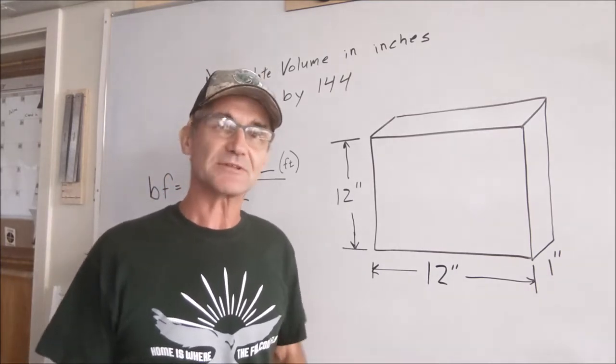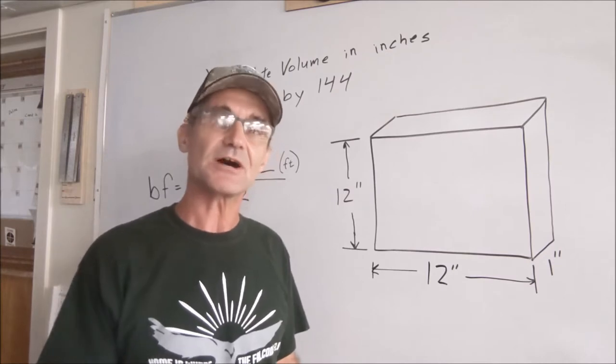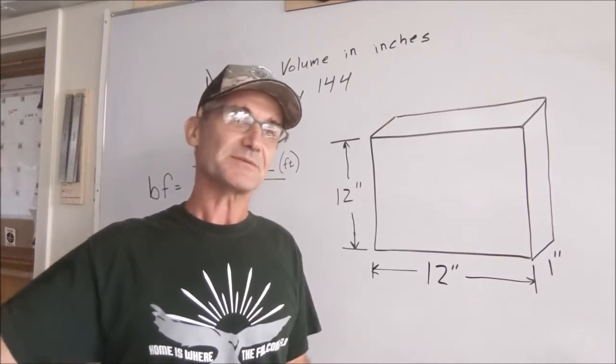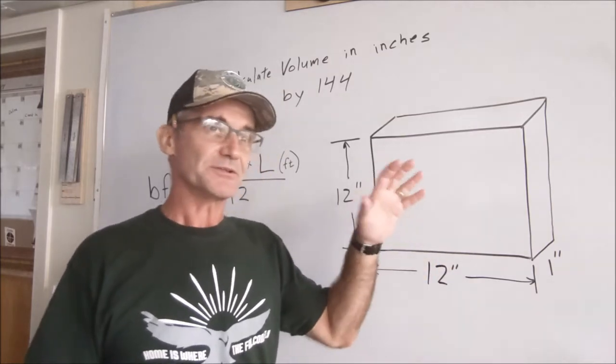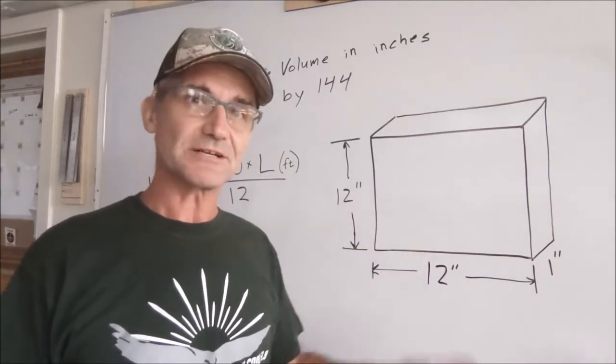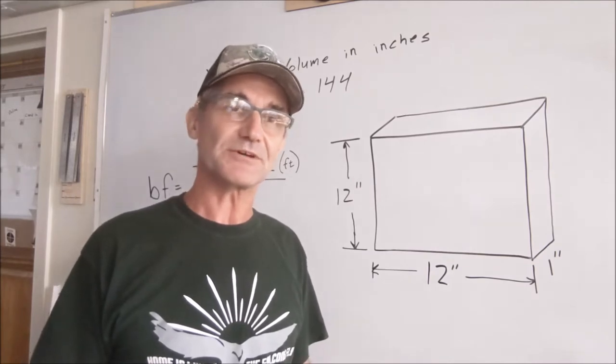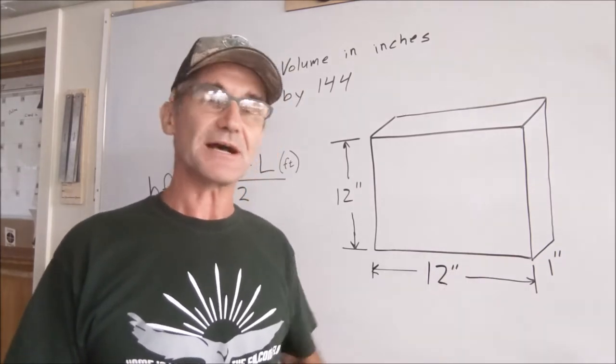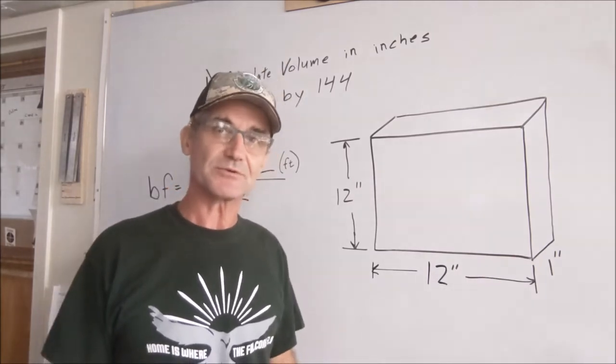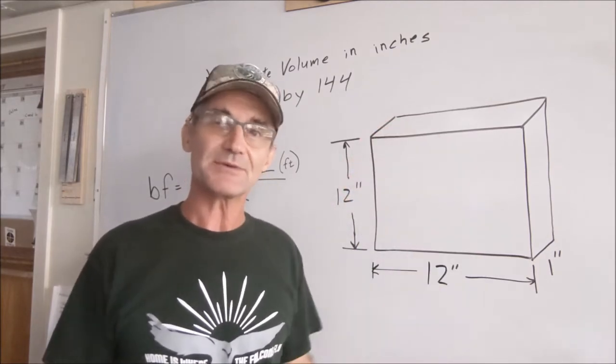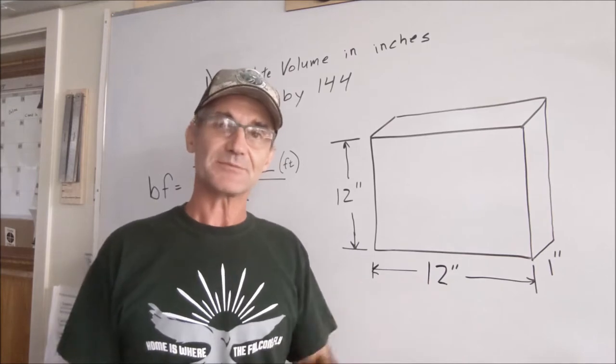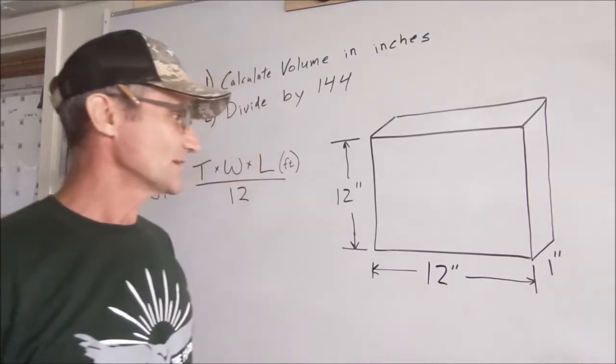So general pricing for lumber is really anywhere between two dollars and maybe ten, twenty dollars a board foot. Beautiful burl, walnut burls for fine woodworking or gun stocks could sell up to a hundred, two hundred dollars a board foot. And then inexpensive pine might even be as low as one dollar a board foot. Even if you're selling logs to the mill, they still buy it by the board foot and they sell it by the board foot.